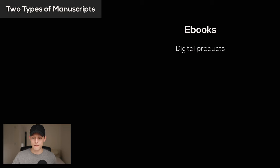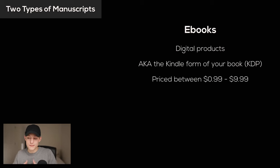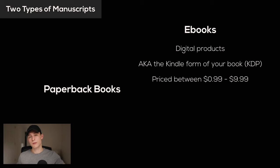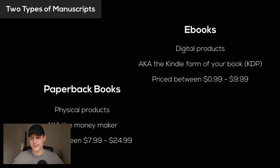We're talking about two types of manuscripts: ebooks and paperbacks. Ebooks are digital products — the Kindle version of your book — usually priced between 99 cents and $9.99. On the other side, we have paperback books, which are physical products. For nonfiction, paperback books are where I make most of my money. If you're in fiction, you might make more off ebooks and page reads. Paperbacks are priced between $7.99 and $24.99, totally dependent on your niche.